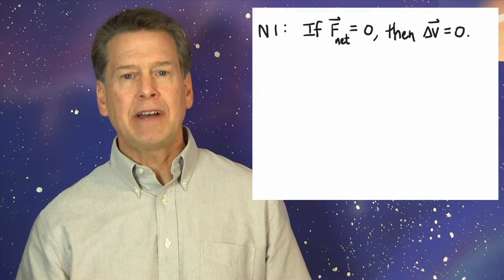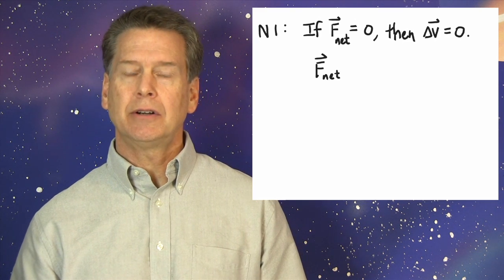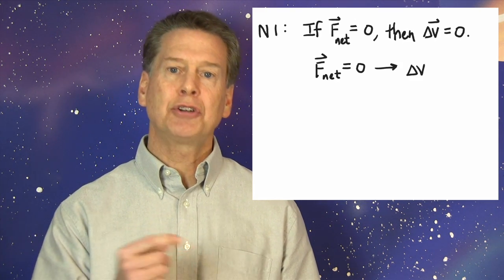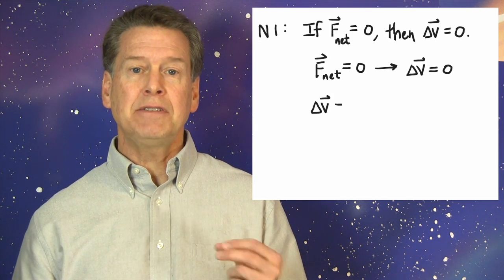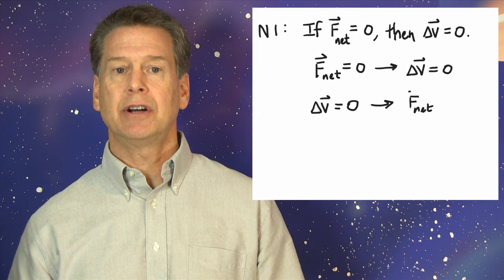Look, N1 says, if F vector net equals zero, then delta V vector equals zero. But nature shows us that every logical rearrangement of this sentence is also true. If delta V vector equals zero, then F vector net equals zero.